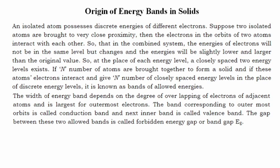In a solid material, an isolated atom possesses discrete energies of different electrons. If two isolated atoms are brought to very close proximity, the electrons in the orbits of two atoms interact with each other, so that in the combined system the energies of electrons will not be at the same level but will be slightly lower and larger than the original value.